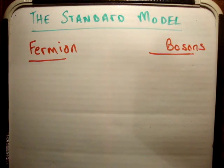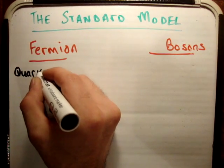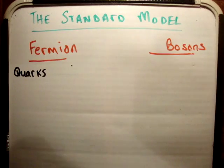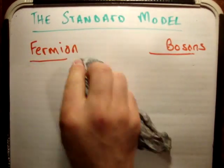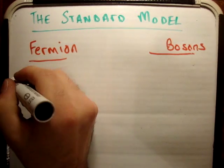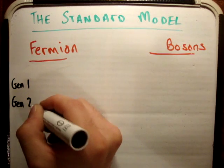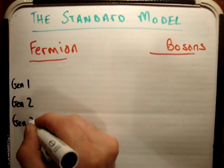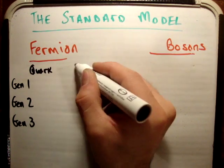So fermions are broken down further into the following. They're broken down into quarks and leptons and I need to do one more thing in order to draw this. They're broken down into quarks and leptons. Just bear with me now, one second. Alright, so we have a quark and we have a lepton.